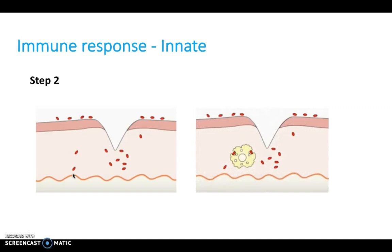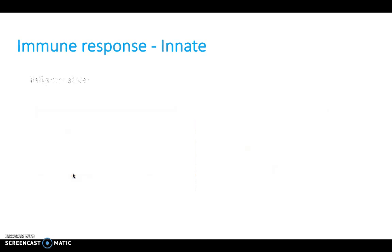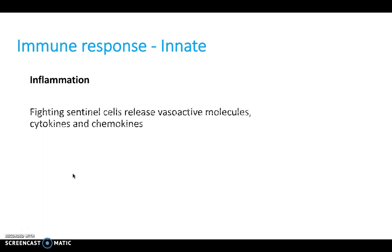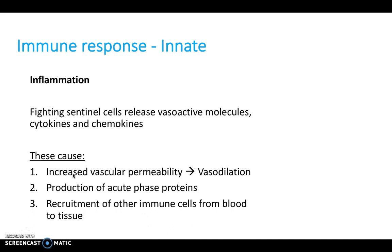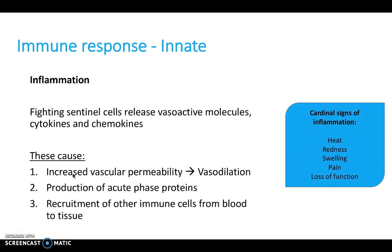Here we see a macrophage coming along, ingesting the pathogen and lysing it — in other words killing it. This inflammation is often noticed as redness and warmth on the skin. Sentinel cells release vasoactive molecules — cytokines and chemokines — leading to vasodilation, recruitment of other immune cells, and production of acute phase proteins. We see this as heat, redness, swelling, and pain, which are actually good signs that we're responding to infection.